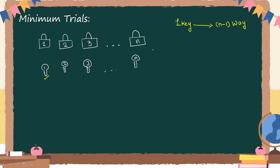After the first key, I move to the second key. For example, if the first lock is assigned, I am left with n minus one locks. But again I will not try all n minus one — I will try only n minus two. In the worst case, if it is not applicable in n minus two, that key must be for the last lock. So the second key gives n minus two ways.